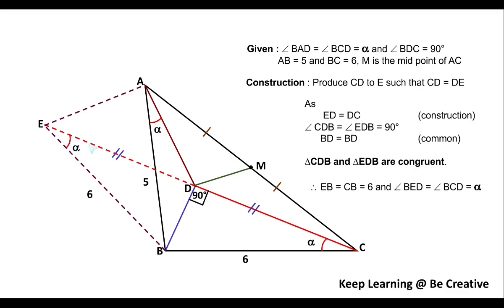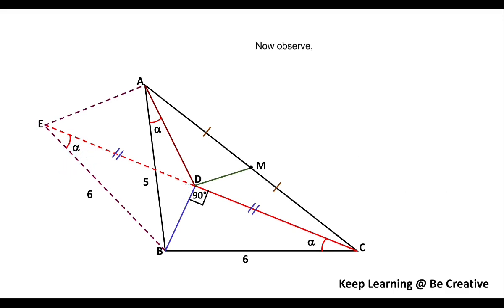Now as we have marked this angle alpha, you must have observed that we have two angles equal. Which are they? They are angle BED equals angle BAD which are equal in measurement, that is alpha. So what do we think that by the help of this, what we can say?